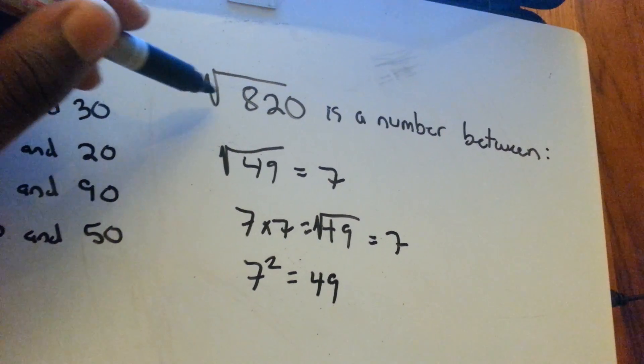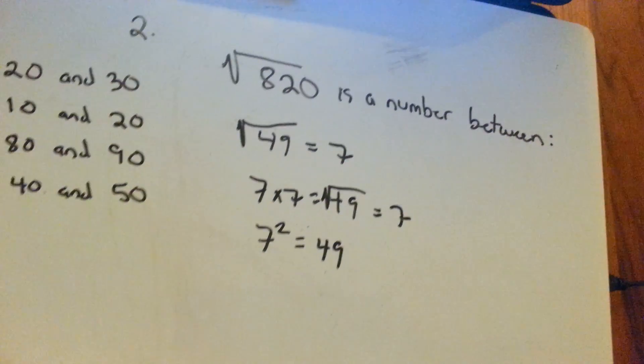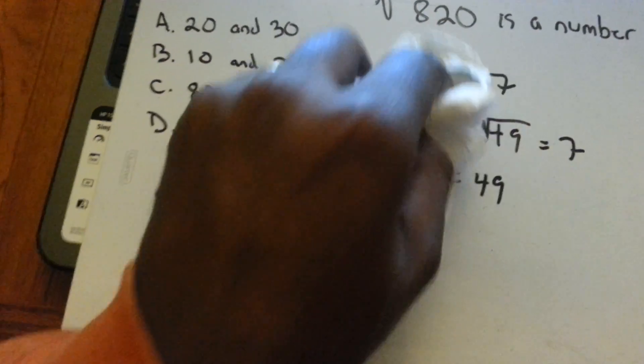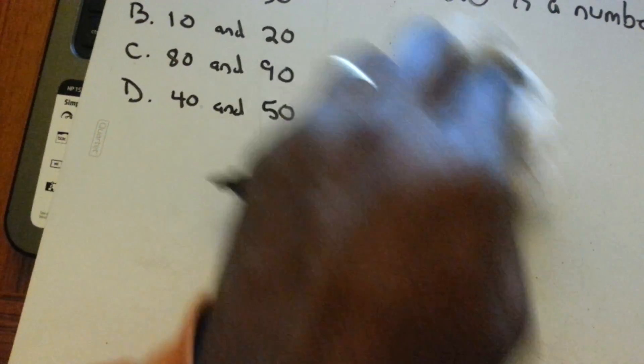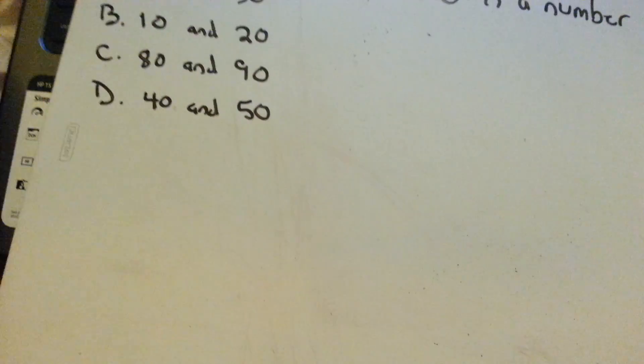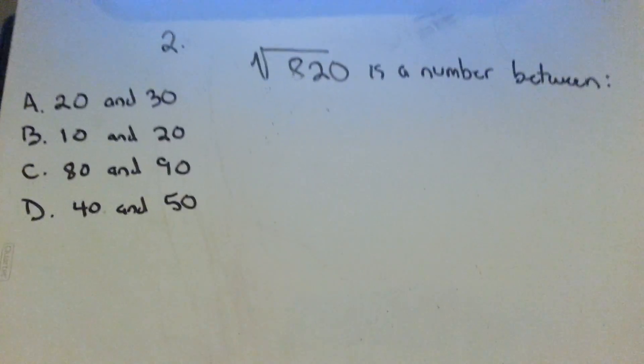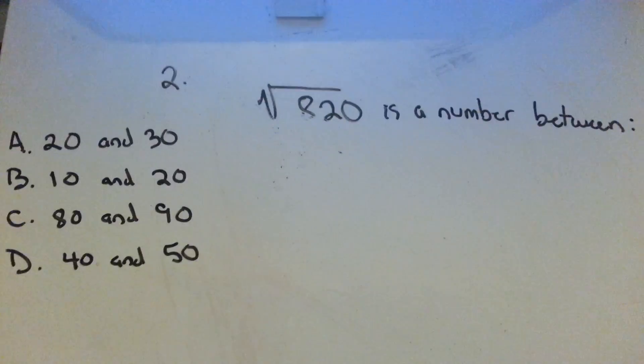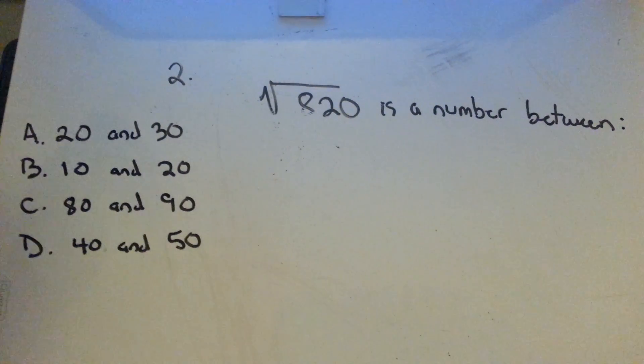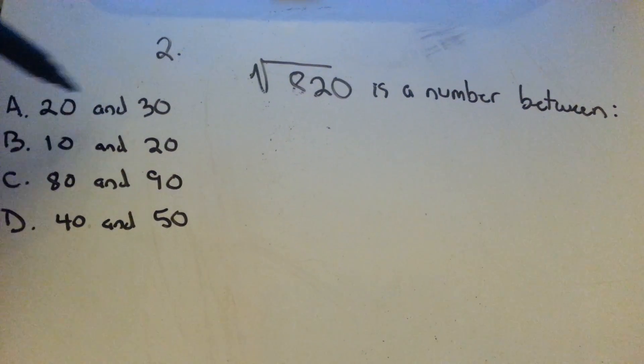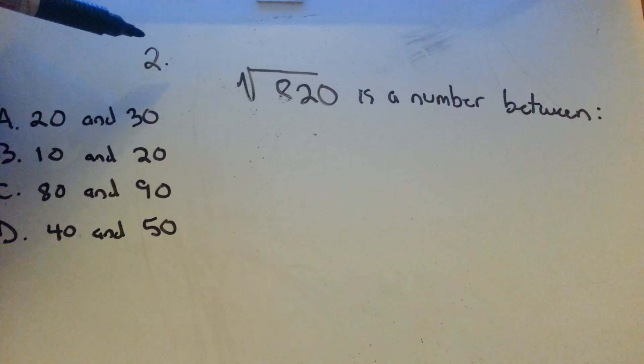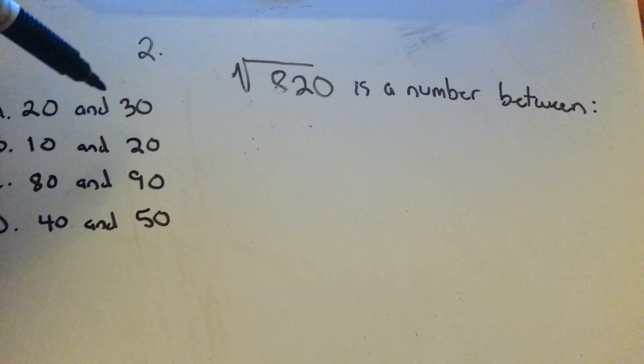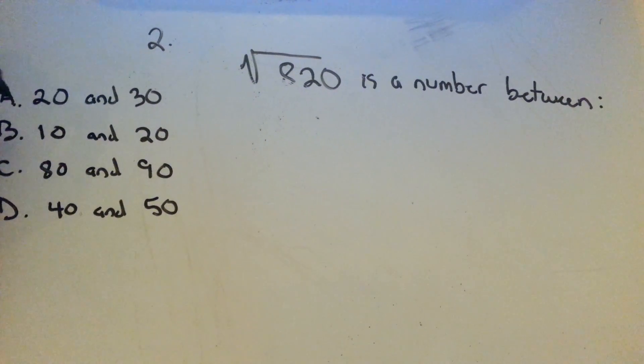So for this number here, 820, they give us two sets of numbers and a bunch of different choices. The easiest thing to do here would just be to go through and multiply and try to figure out which one of these sets of numbers squared would give us values that 820 would fall between.